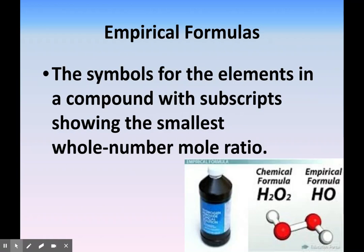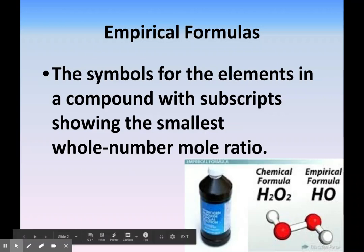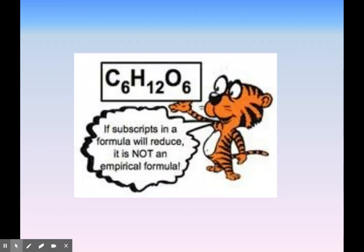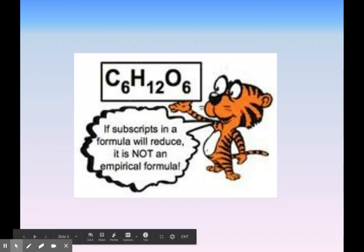An empirical formula is when you have a chemical formula but the subscripts are written in the smallest whole number ratio. You can see here we have H2O2, and that's reduced to 1 to 1. Here we have sugar C6H12O6. The smallest ratio would be 1 to 2 to 1, or CH2O.